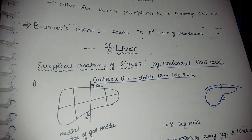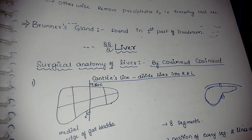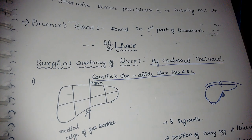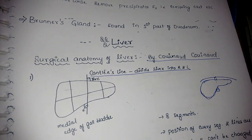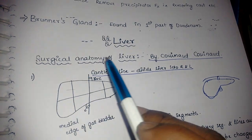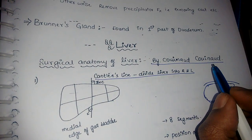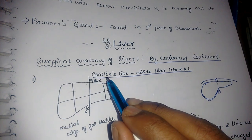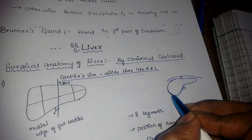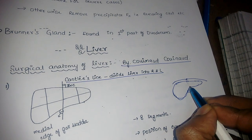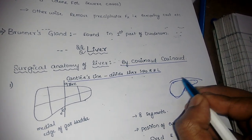Hi friends, today we are dealing with a surgery topic on the liver — specifically the surgical anatomy of the liver by Couinaud. The Cantlie line divides the liver into the right and the left lobe.